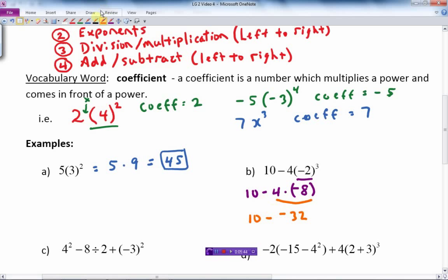10 minus 4 times negative 8 is negative 32. We know that when there's two negatives together between two numbers, these two negatives become a positive, so it becomes 10 plus 32 which equals 42. There is our final answer of positive 42.